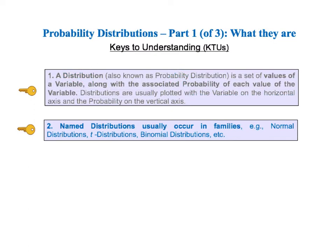The second KTU says that named distributions usually occur in families. For example, normal distributions, T distributions, binomial distributions, etc.